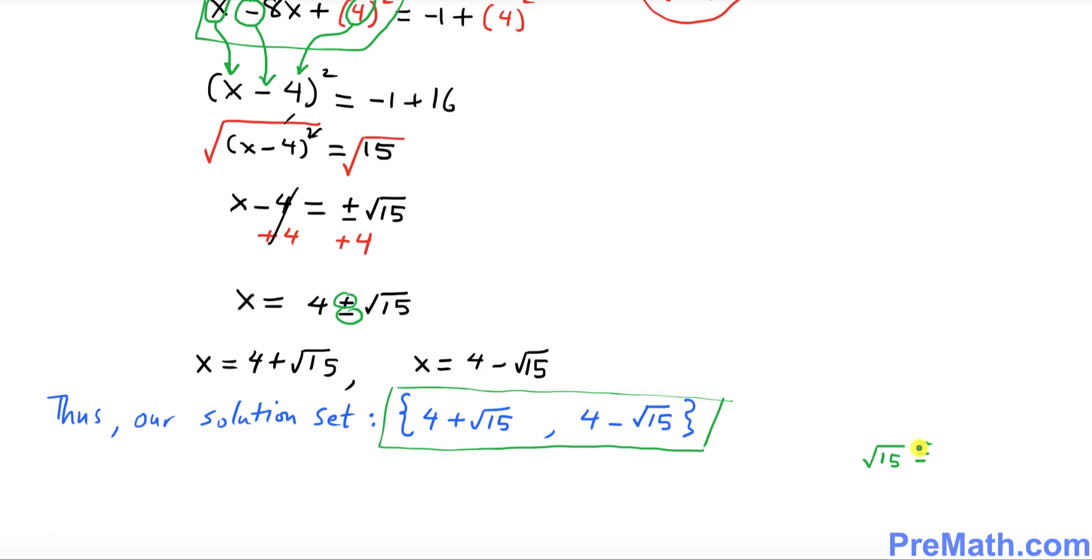approximately equal to 3.873. So here is our answer in two versions, the first one in terms of radicals, the other one in terms of decimals. Whichever you like you take it. Thanks for watching and please subscribe to my channel for more exciting videos.